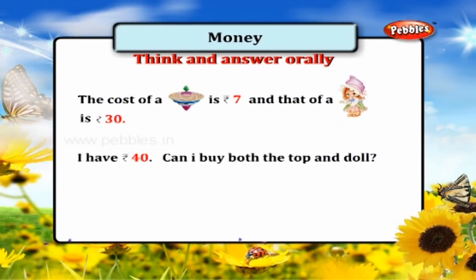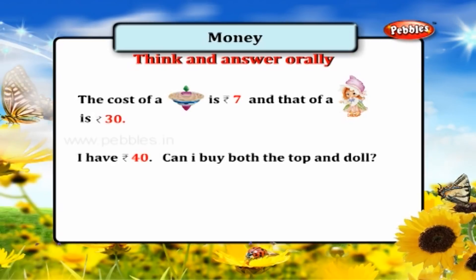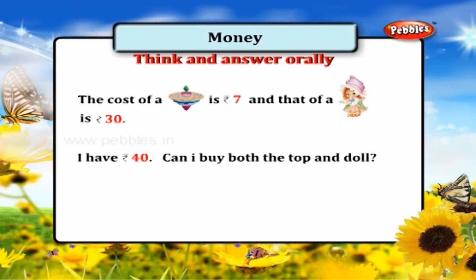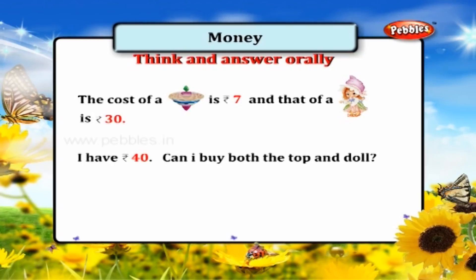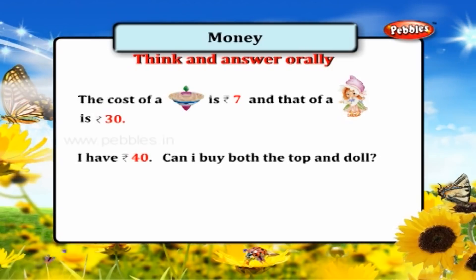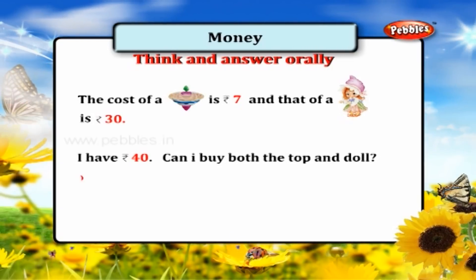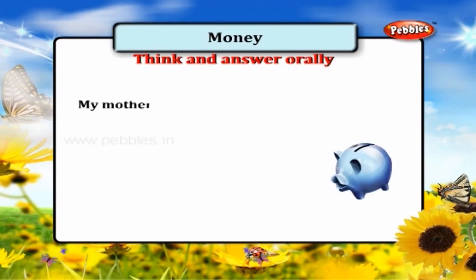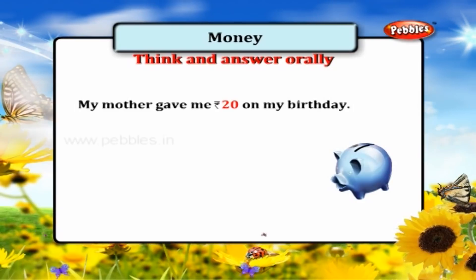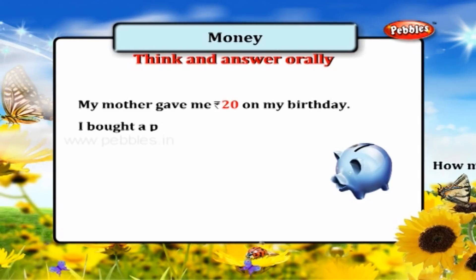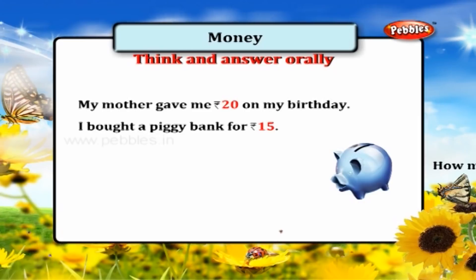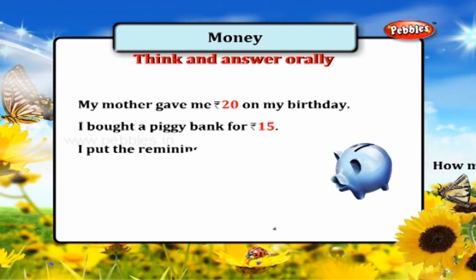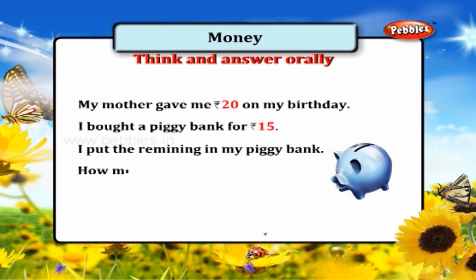The cost of a top is rupees 7 and that of a doll is rupees 30. I have rupees 40. Can I buy both the top and the doll? Yes. My mother gave me rupees 20 on my birthday. I bought a piggy bank for rupees 15. How much did I save? Rupees 5.